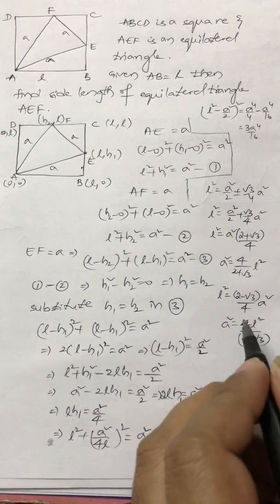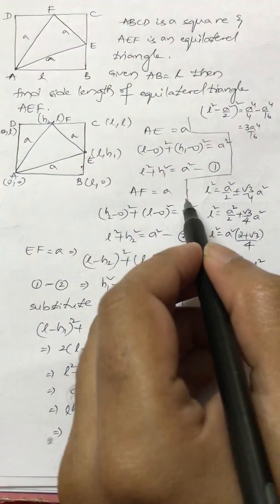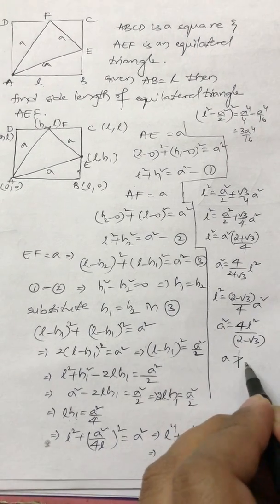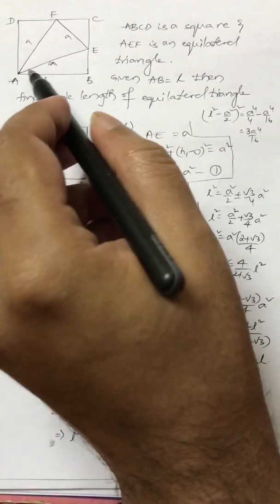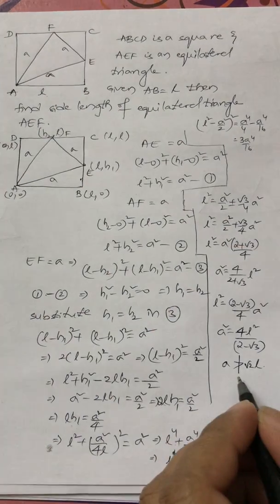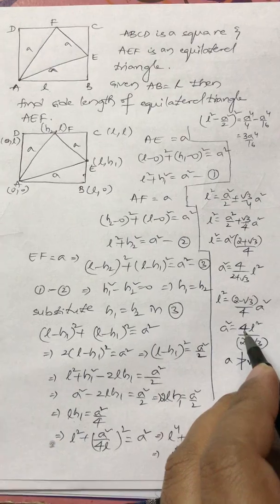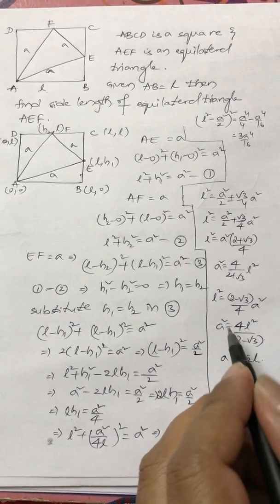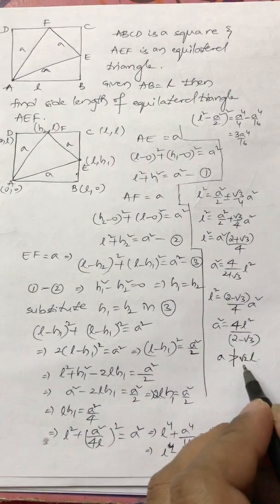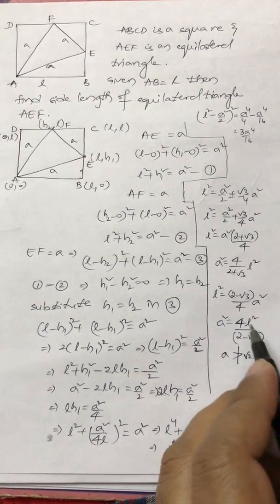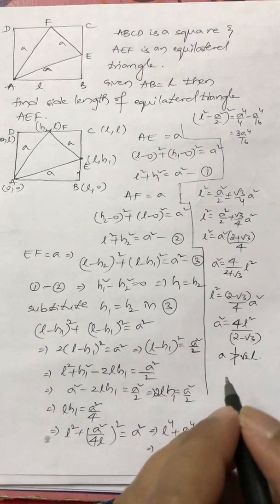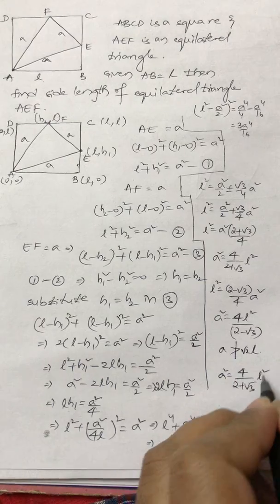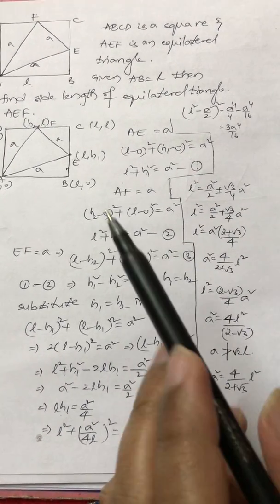We cannot accept the second value. The reason is that a cannot be greater than √2·l, because a is the side length of this triangle and the side length cannot be greater than the diagonal length of the square. The value 4·(2 + √3)·l² is greater than 2l², so that solution is rejected. Therefore, the acceptable answer is a² = 4l²/(2 + √3). This is the required side length in terms of the length of the square.